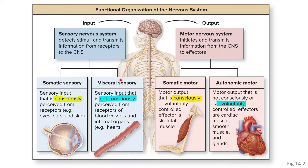The visceral sensory system includes sensory input that is not consciously perceived. For example, there are neurons in your blood vessels that are able to detect the pressure of those vessels, but you don't have any conscious awareness of that input.